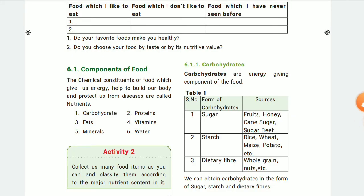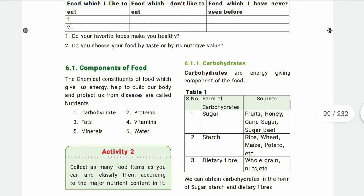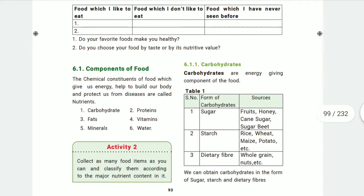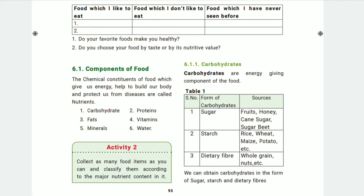Next we are going to discuss about components of food. The chemical constituents of food which give us energy, help to build our body, and protect us from diseases are called nutrients. We are going to discuss about nutrients in food — about energy, building our body, and protecting us from diseases.